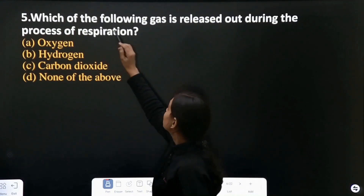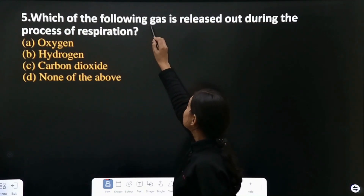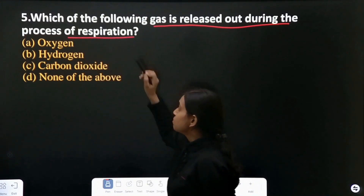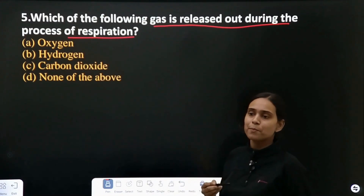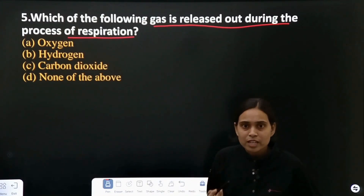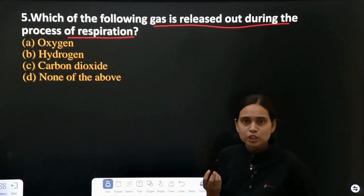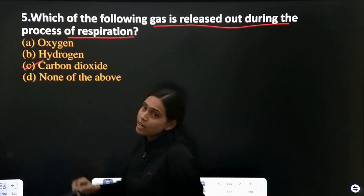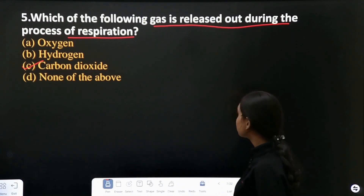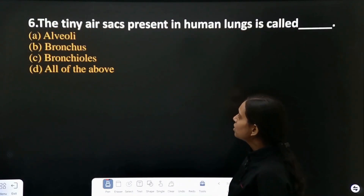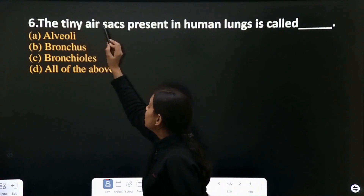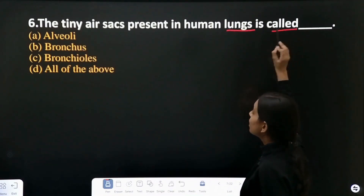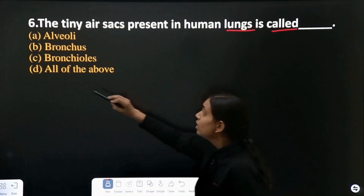Question 5: which of the following gas is released during the process of respiration? Which gas do you release during respiration? That is carbon dioxide. Question 6: the tiny air sacs that are present in human lungs are called? They are called alveoli, and they are present in the lungs.